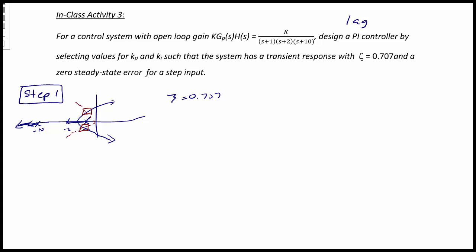We're going to use our equating of the desired characteristic equation to solve this. First, we have Δ(s) = s³ + 13s² + 32s + 20 + K.